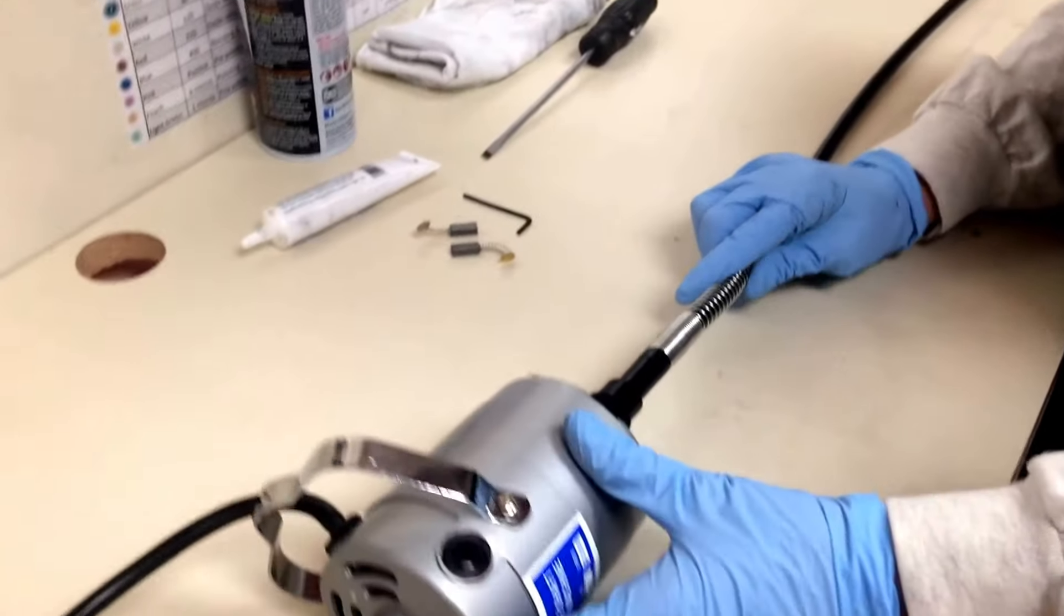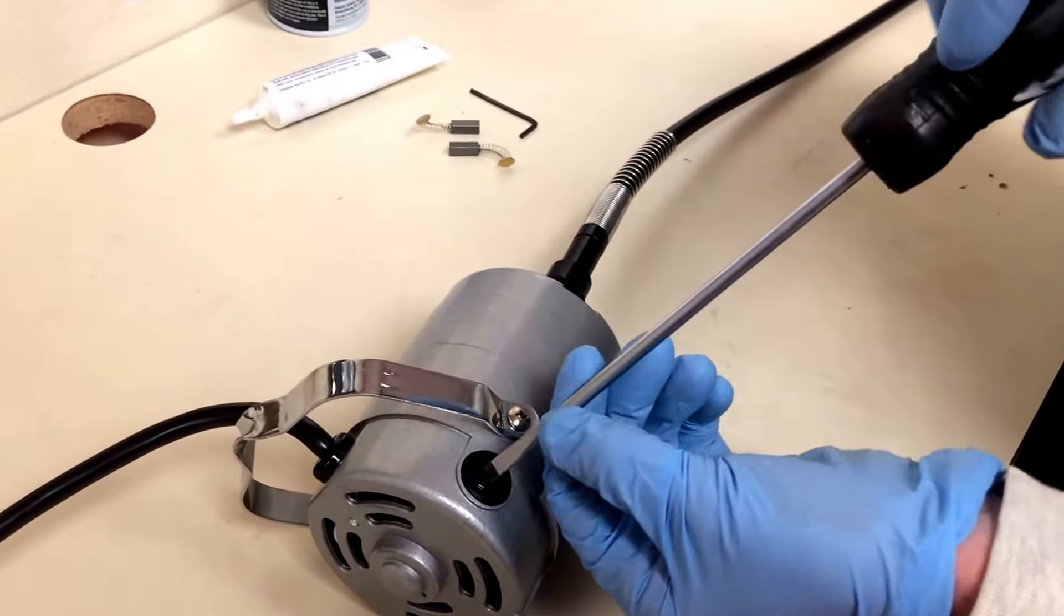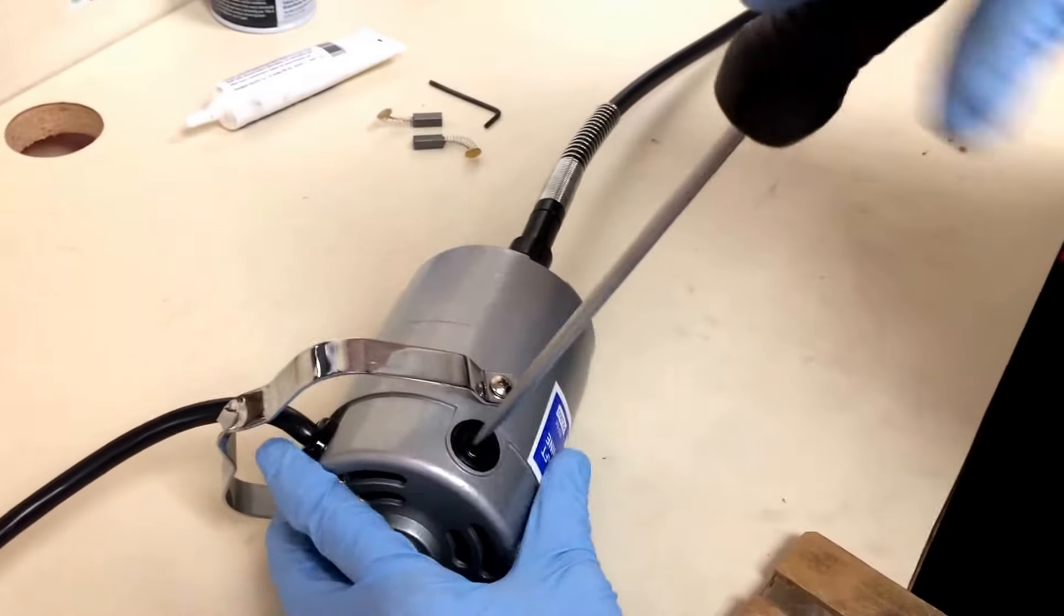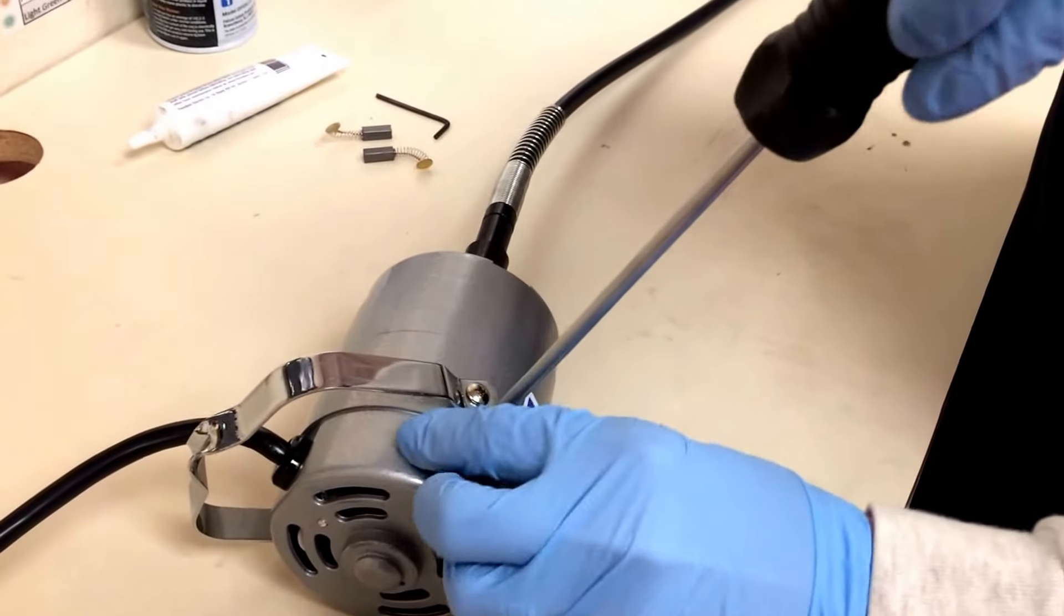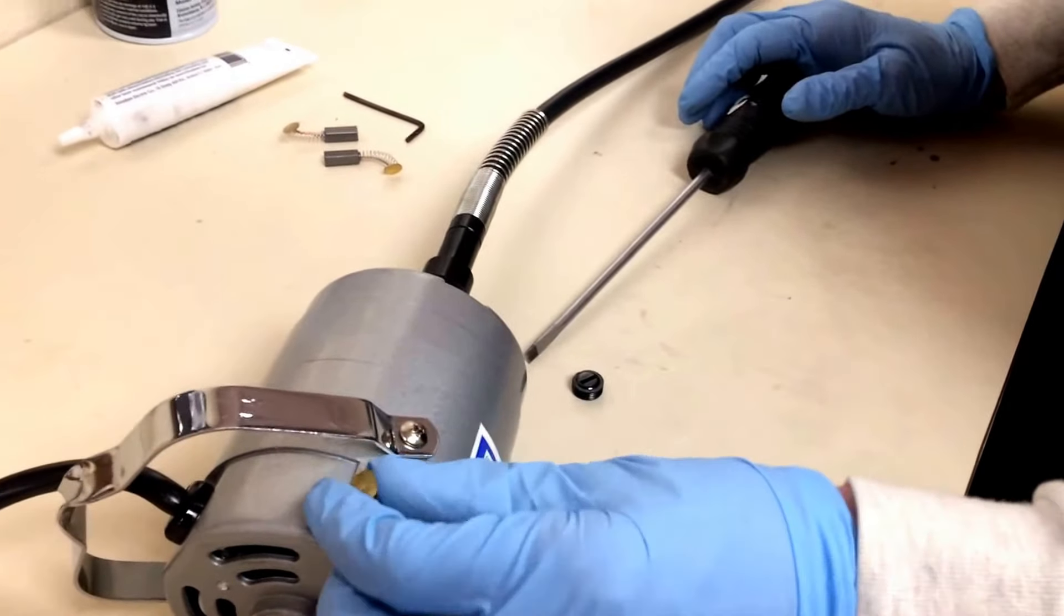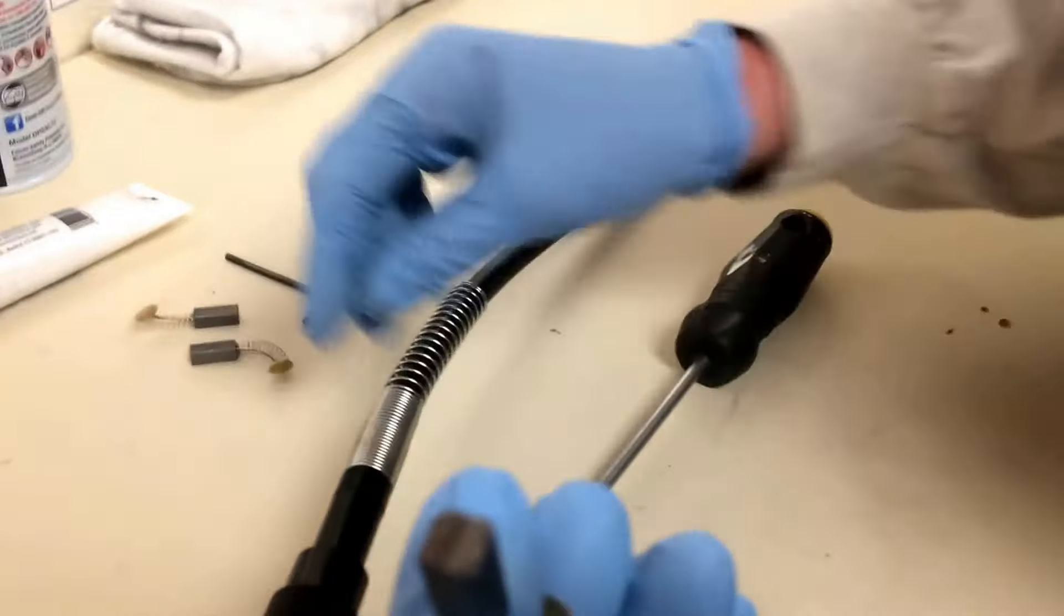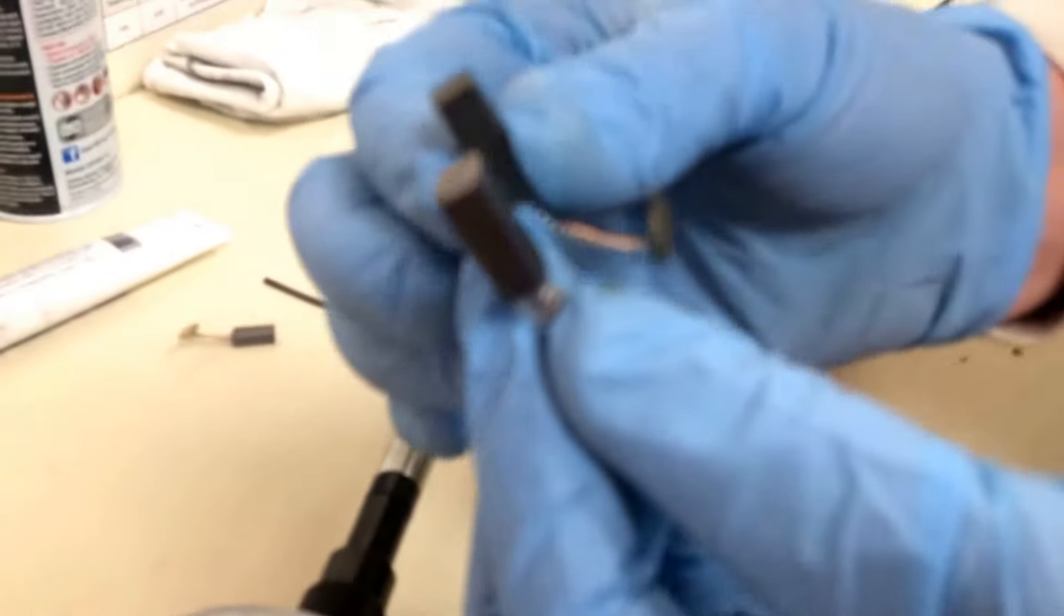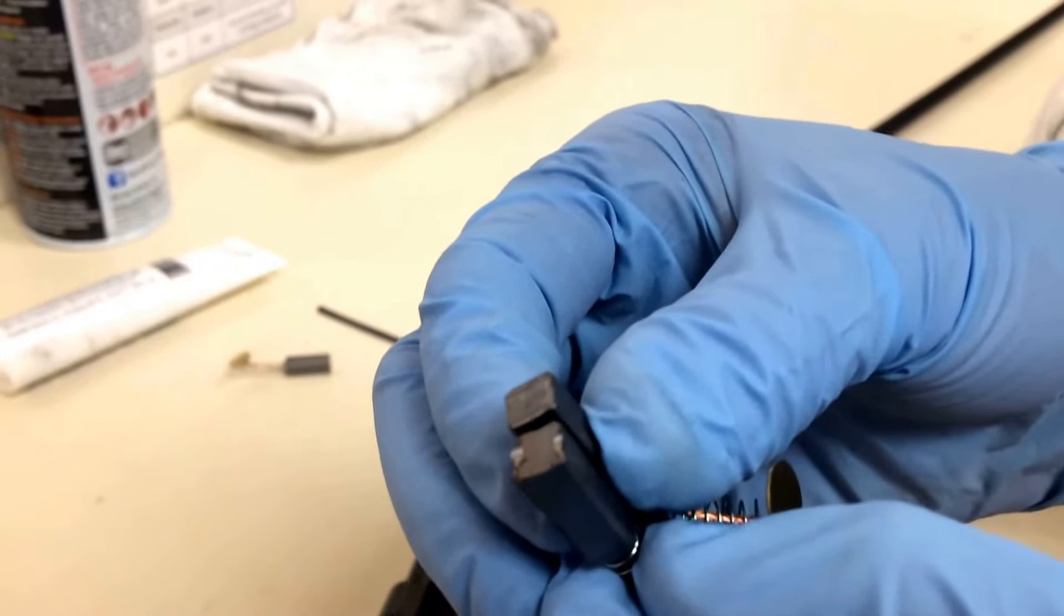So coming back up here to the motor, go ahead and take your flathead screwdriver and you're going to take the brush cap off to expose the motor brush to see if they're worn or not. So it's on a spring and you just gently pull it out and you can see that this one is not worn out.